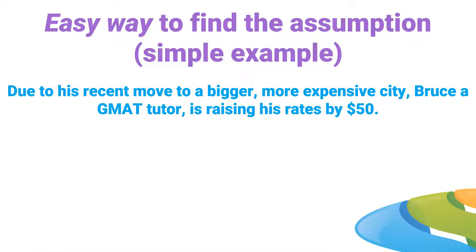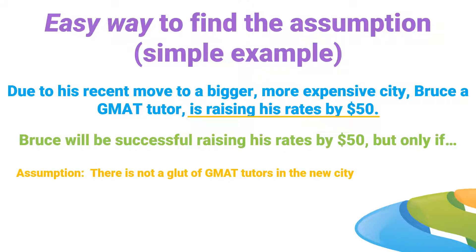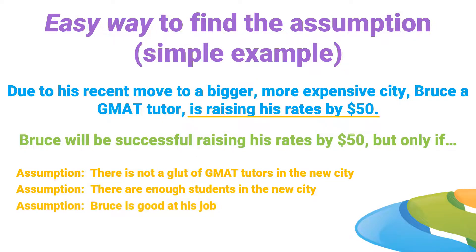Let's take a look at the simple example. Due to his recent move to a bigger, more expensive city, Bruce, a GMAT tutor, is raising his rates by $50. First thing we do: pick out the conclusion — what will happen, or what's the goal? The goal is for Bruce to raise his rates by $50. That's the conclusion. So to find the assumption, we say: 'Bruce will be successful raising his rates by $50, but only if...' Anything that finishes that sentence logically is a valid assumption. For example: there's not a glut of GMAT tutors in the new city; there are enough students in the new city; Bruce is good at his job; or schools still require the GMAT.